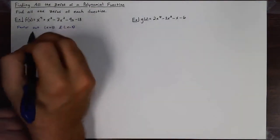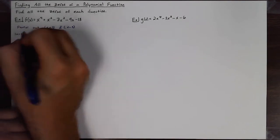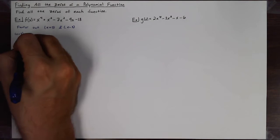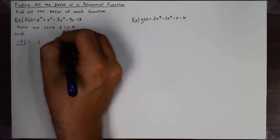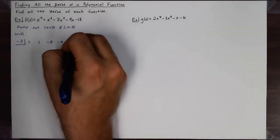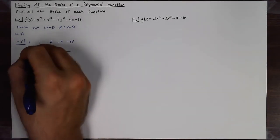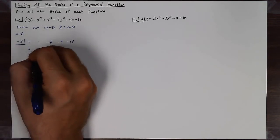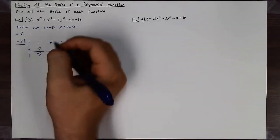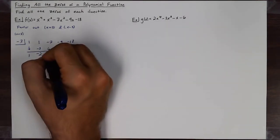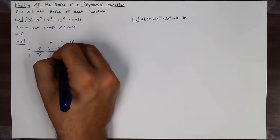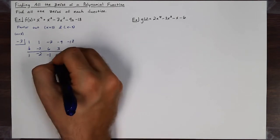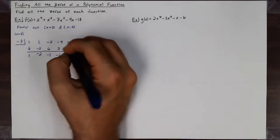I'm going to use synthetic division. First I'll factor out (x+3), which means I use negative three, with coefficients 1, 1, -7, -9, and -18. Carry the 1 down. Negative three times 1 is -3; 1 plus -3 is -2. Negative three times -2 is 6; -7 plus 6 is -1. Negative three times -1 is positive 3; -9 plus 3 is -6. And -3 times -6 is positive 18, which adds to zero.